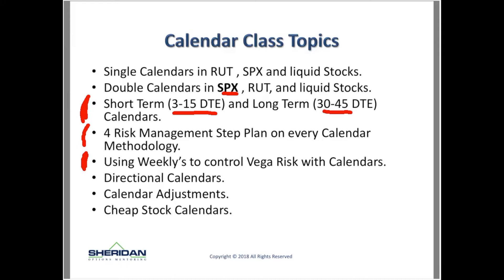We'll cover using weeklies to control vega risk with calendars. Ever since the advent of weeklies four or five years ago, calendars have become a much less risky strategy from a volatility point of view. For your long option in a calendar you can buy it one week out, four weeks out, two months out — you have a lot more flexibility. I think calendars are now one of the safest and most conservative strategies out there.